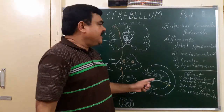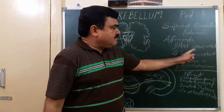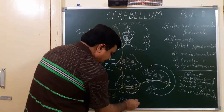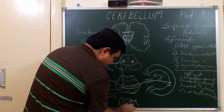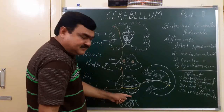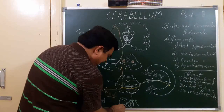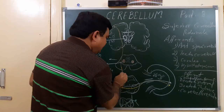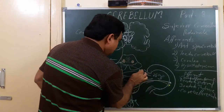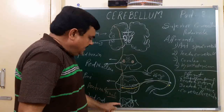First of all, we will discuss the afferents passing through this superior cerebellar pedicle. The first afferent is the anterior spinocerebellar tract. The posterior spinocerebellar tract, which we have already discussed, passes through the inferior cerebellar pedicle, and those fibers cross to the opposite side. The anterior spinocerebellar tract passes and turns like this, passing through the superior cerebellar pedicle.